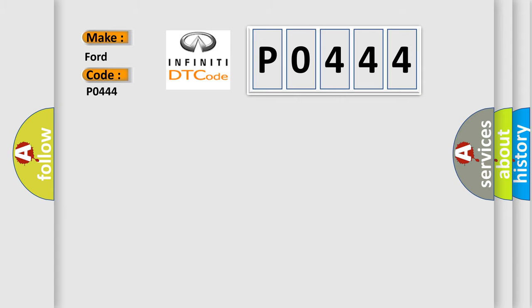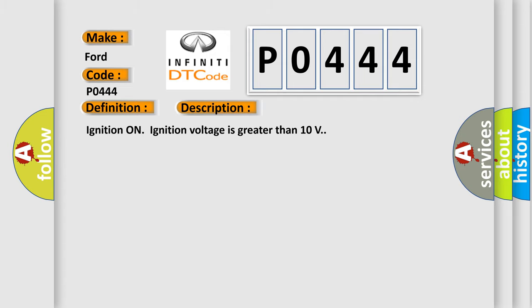The basic definition is Front steering position sensor circuit plausibility failure. And now this is a short description of this DTC code. Ignition on, ignition voltage is greater than 10 volts.